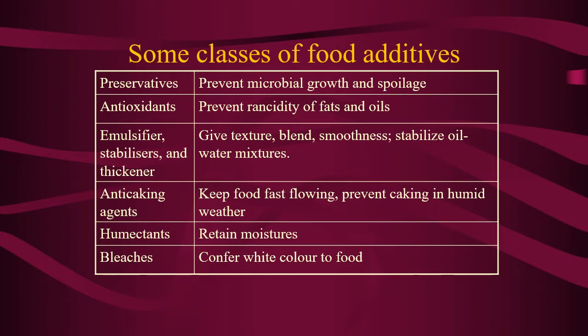There is also a food additive called a humectant, which retains moisture. The last class of food additive is bleach, which imparts a white color to food. For example, the original color of bread should be almost brown, but when we add bleach to the flour, if you use bleached flour to bake bread, your bread will become very white.